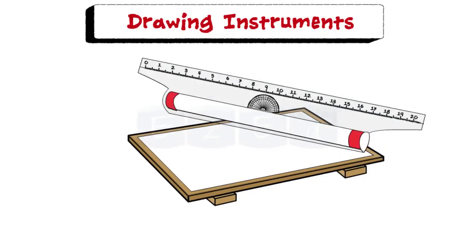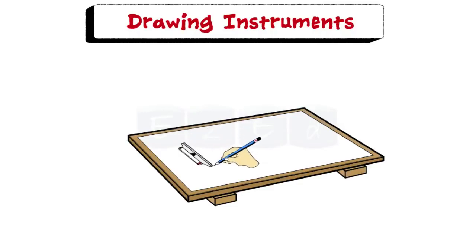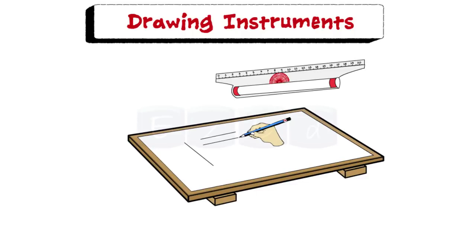Next is a roller scale. It has a roller in it. It is used for drawing vertical lines, horizontal lines, parallel lines, angles, and circles.